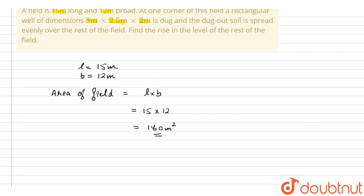Now it is given that a well was dug at one corner, and its length, breadth, and height are given as: length is given as 8 meters, breadth is given as 2.5 meters, and height is given as 2